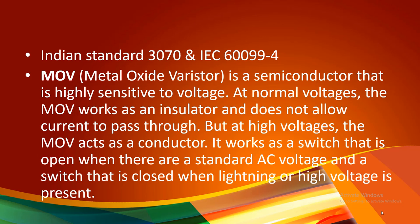Now if we look at the MOV — metal oxide varistor — it is a semiconductor. It behaves as both a semiconductor and an insulator. The MOV blocks have a rated voltage, which is the normal voltage for which the surge arrester is designed. For example, if we designed the surge arrester for 9 kV, that is the rated voltage.